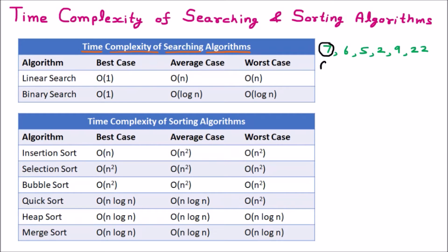We should understand one thing: whenever we are going to search an element and we find it on the very first step, that is called the best case. When we are searching and there are, say, 10 elements and we do approximately 5 comparisons — finding the element somewhere in the middle — that is called the average case. And if we scan all the elements and find the element at the last place, that is called the worst case.